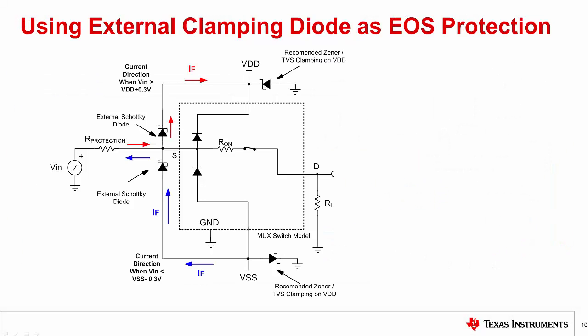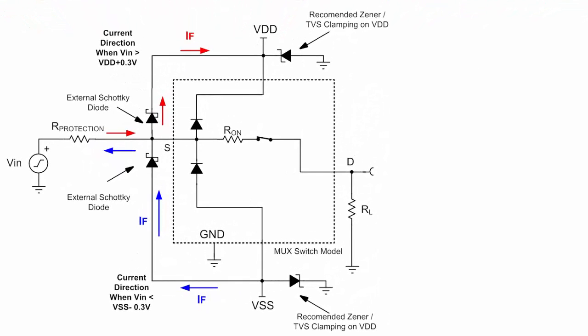Another common method of protecting a multiplexer during an overvoltage condition uses Schottky diodes connected from the input terminal to each supply voltage. Schottky diodes have a typical forward drop of 0.2 to 0.4 volts, whereas ESD diodes have a forward voltage of 0.6 to 0.7 volts. Thus, the overstressed current flows through the external Schottky diodes and not through the device's internal diodes, avoiding excess heat dissipation across the device. Furthermore, the Schottky diodes effectively prevent the inputs from exceeding the supply voltage by more than 0.2 to 0.4 volts, thereby preventing latch-up conditions.